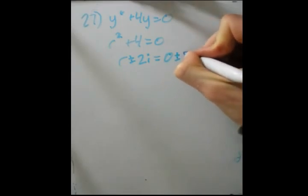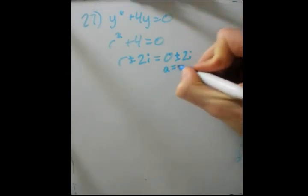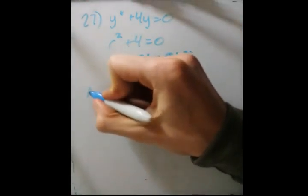So that's why we have those two solutions. Now keep in mind, this is 0 plus or minus 2i. So a equals 0 from earlier, and b equals 2. So now that we have that, we can write our general form again.